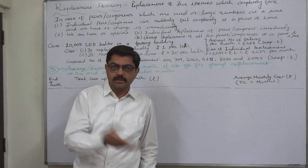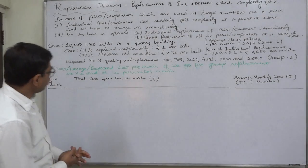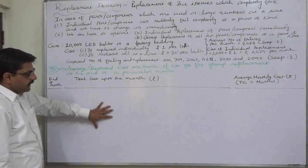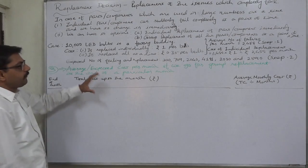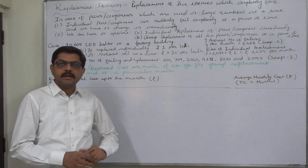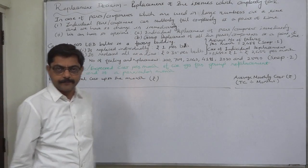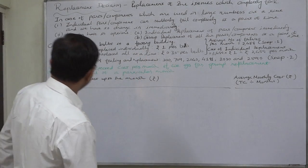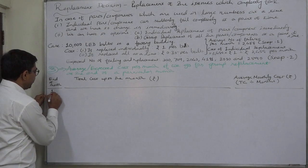We are going to calculate the total cost and average monthly cost if we go for group replacement — that means if we replace all 10,000 bulbs at a time. Let's see what happens if we go for group replacement at the end of the first month, second month, and so on.